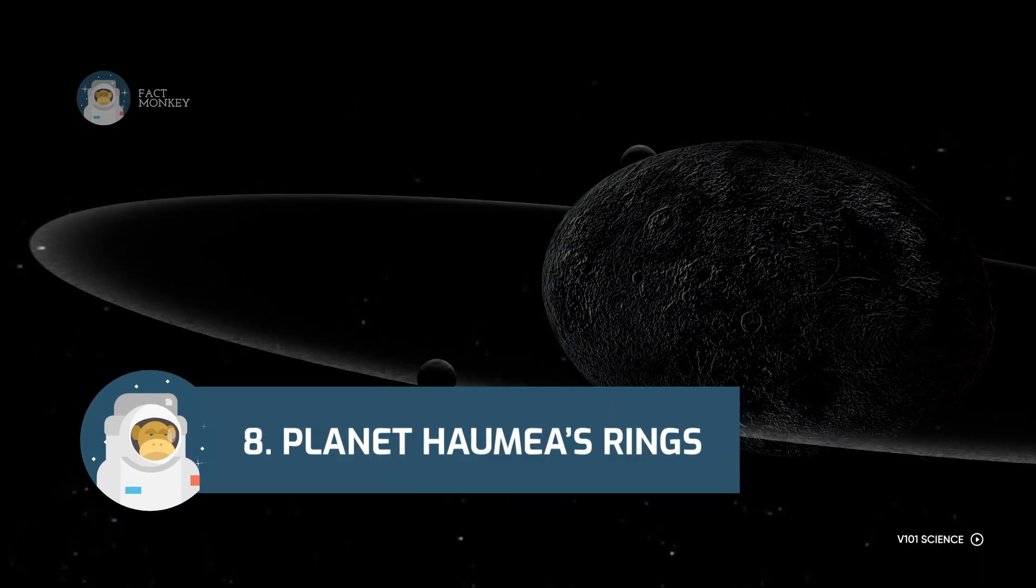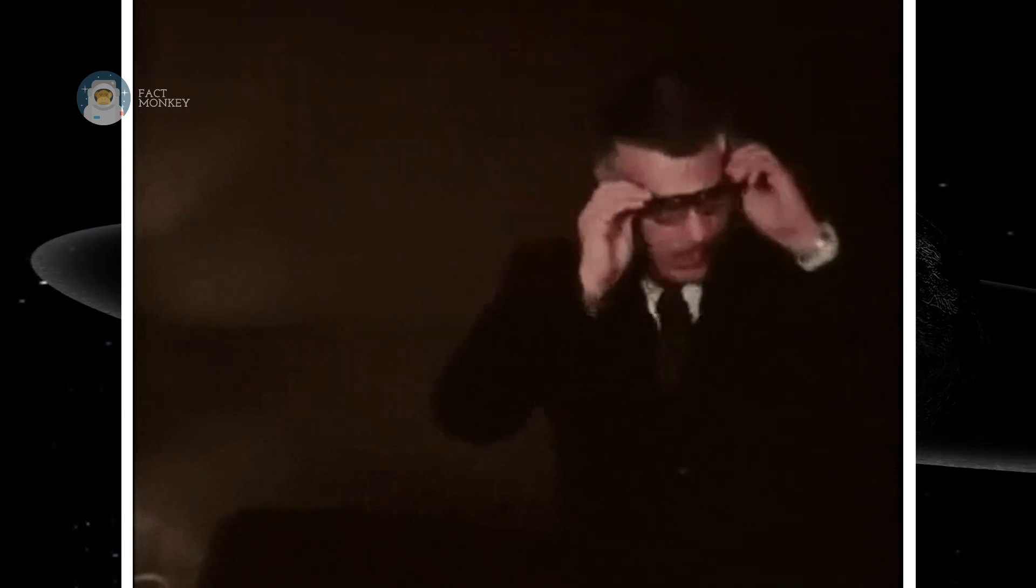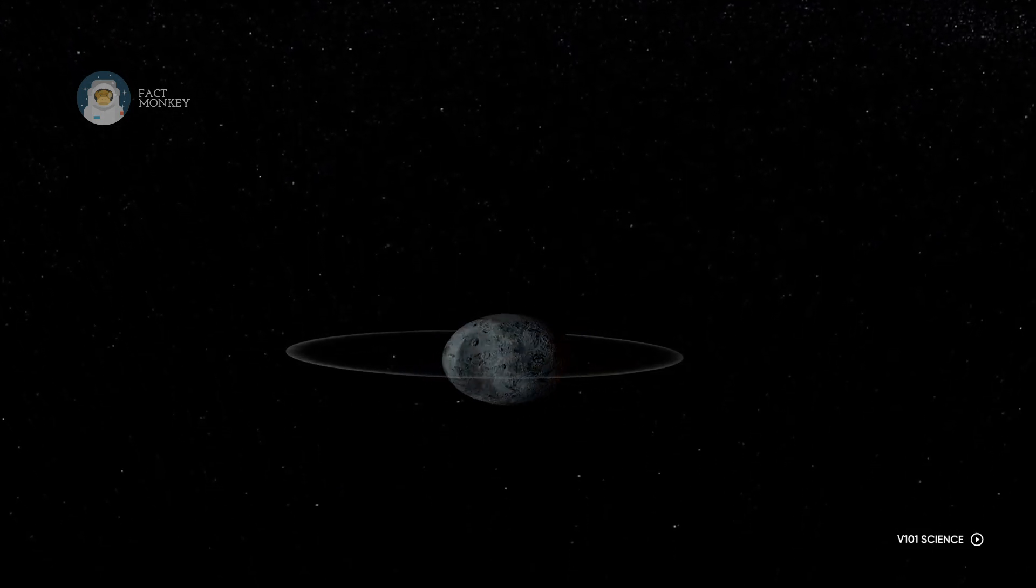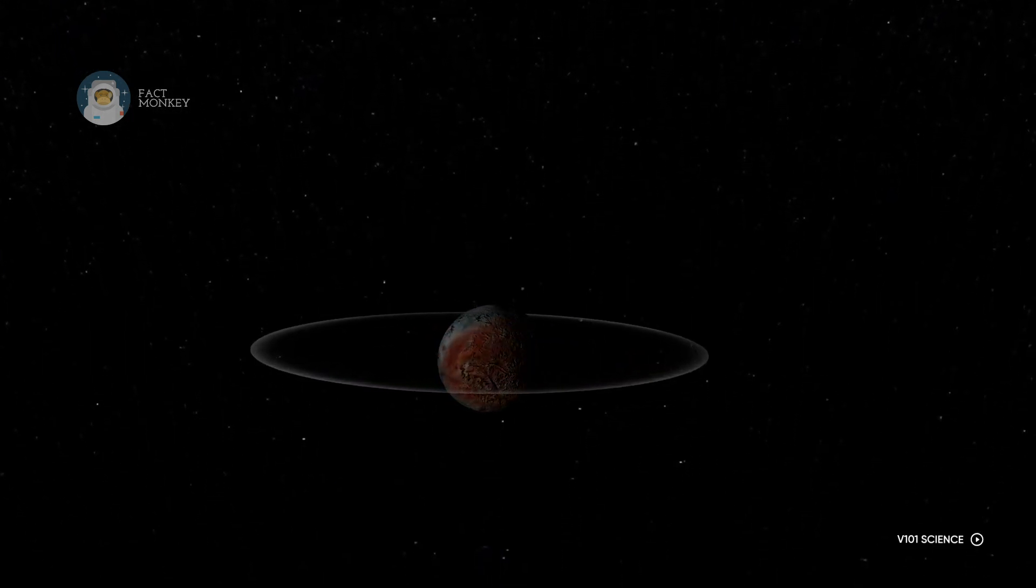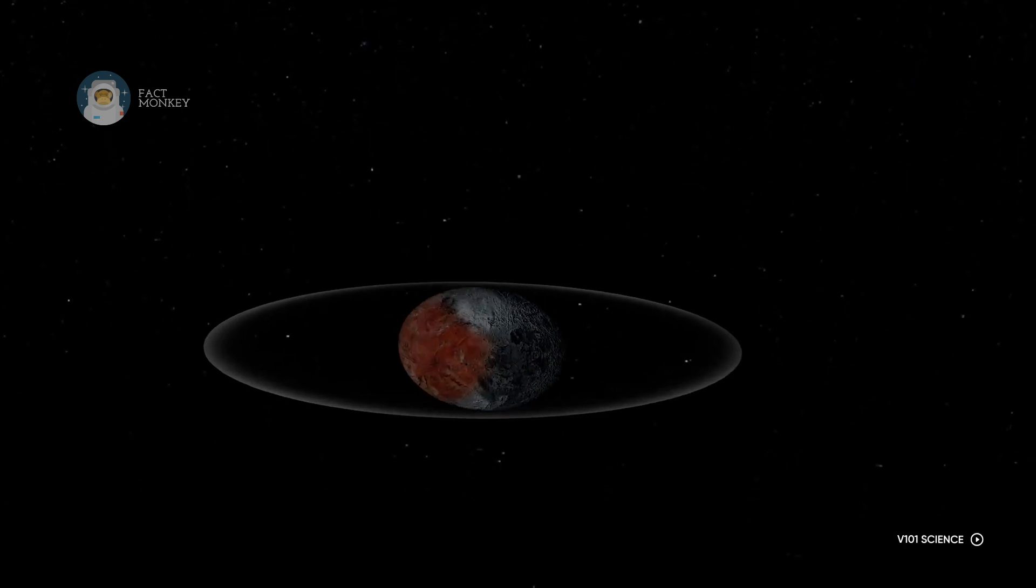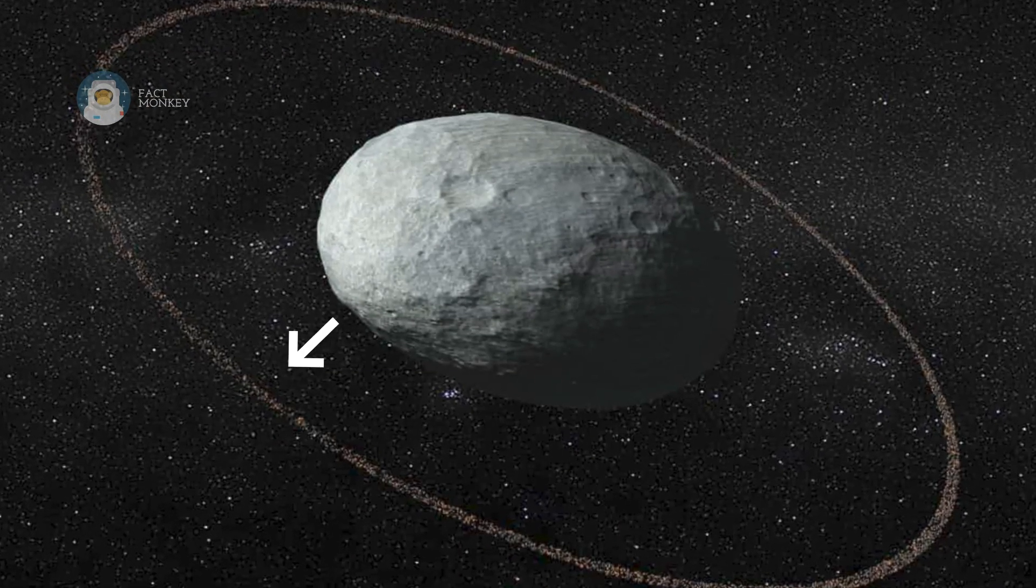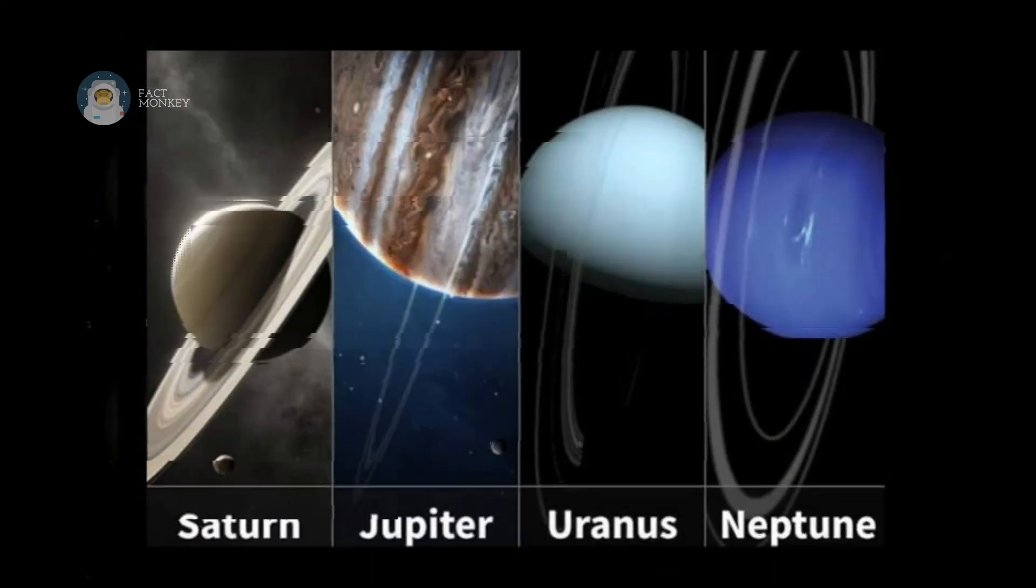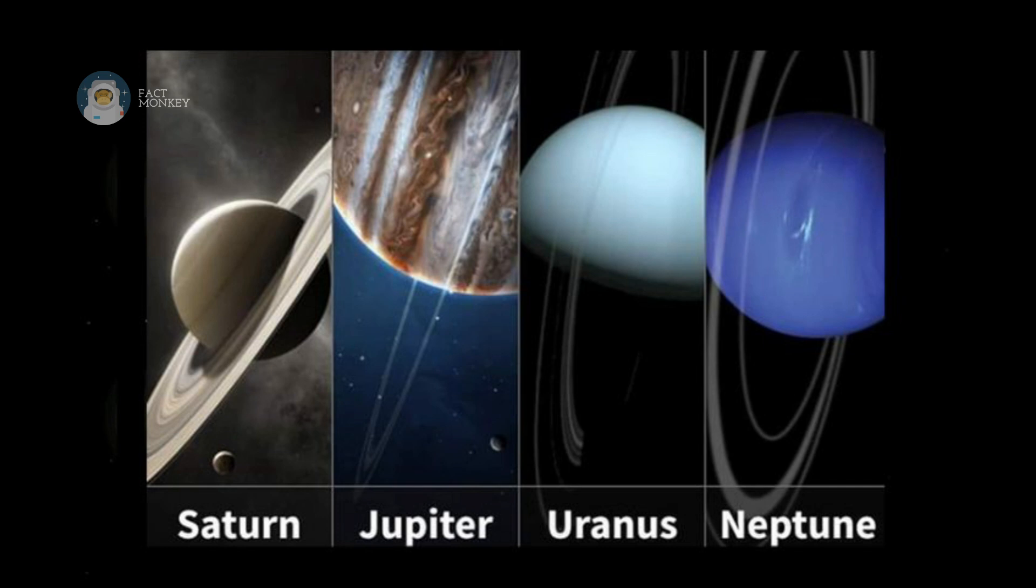Planet Haumea's Rings. At first glance, planet Haumea looks nothing like the average planet in our solar system. Its football-shaped body perhaps makes it the strangest-looking planet you've laid your eyes on. However, Haumea does have one thing in common with some of the biggest planets in our solar system. It's surrounded by a circular ring of particles, something that was previously thought not to exist in anything other than the four gas giant planets.